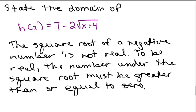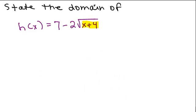Here's our next one. State the domain of h of x equals 7 minus 2 radical x plus 4. We don't have a fraction here but we do have a square root. And when you take the square root of something, we can't take the square root of a negative number to get a real number. So the square root of a negative number is not real. So we have to make sure that the part under the square root cannot be negative because to be a real number, the number under the square root must be greater than or equal to 0. So we're going to take this part under the square root, x plus 4, and make sure that it's greater than or equal to 0. Notice it's okay for it to equal 0 because the square root of 0 is 0.